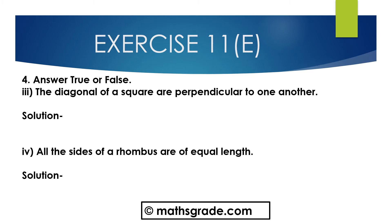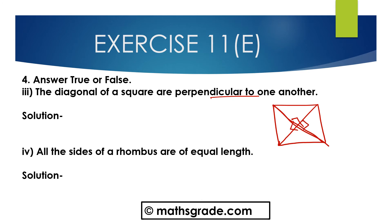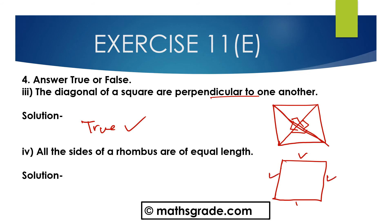Part C: the diagonals of a square are perpendicular to one another — in a square the diagonals are perpendicular and each angle is equal to 90 degrees, so this is true. Part D: all the sides of a rhombus are of equal length — in a rhombus all four sides are equal in length but the angles are not equal to 90 degrees, so this is also true.